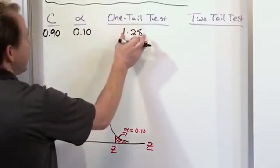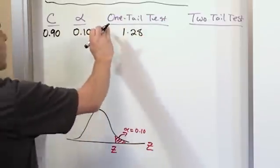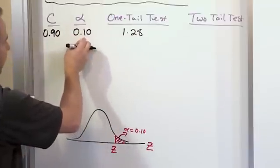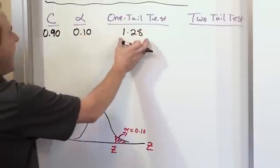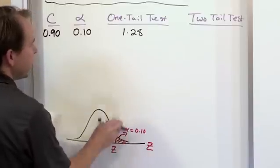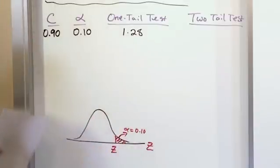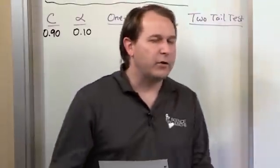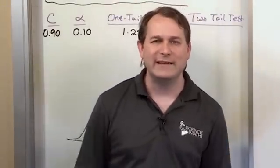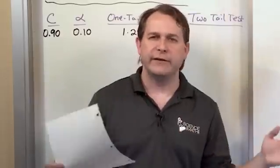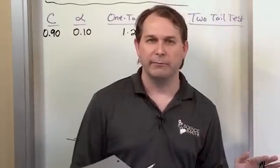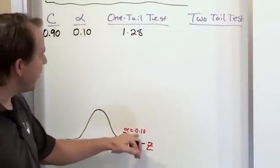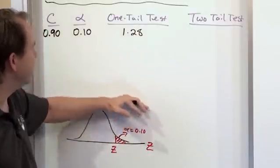That value of Z is never going to change. So if you're doing a one tail test at 90% confidence or 0.10 significance, the value of Z for your rejection region is positive 1.28 — always. This doesn't change whether you have 35 samples, 42 samples, or 69 samples. There are no degrees of freedom here, so the Z value that gives this area never changes.